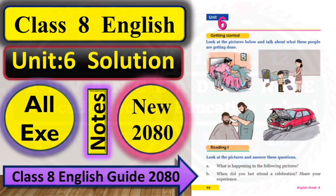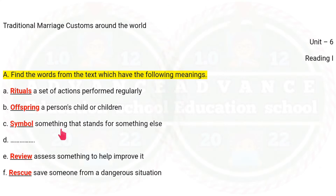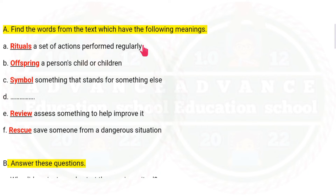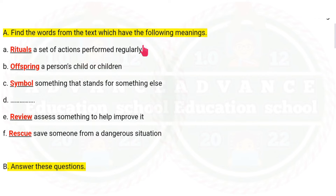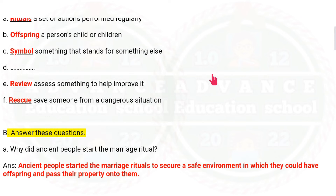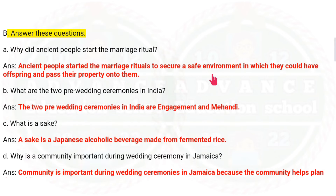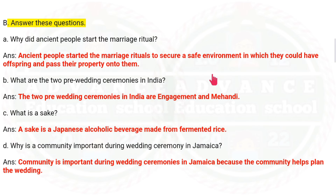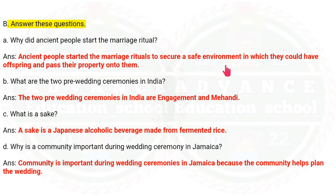Welcome to Class 8 English subject Unit 6, all exercise solution. So let's start. Unit 6, Reading 1. You can write here and you can watch the video. Please don't skip the video — if you go too fast, you won't get the full exercise.